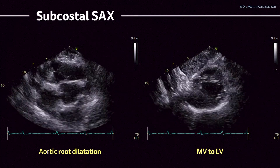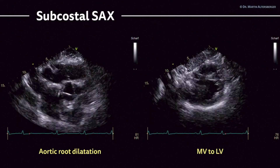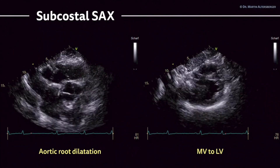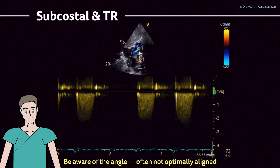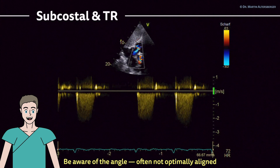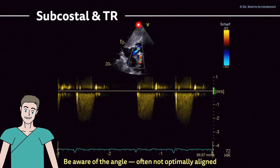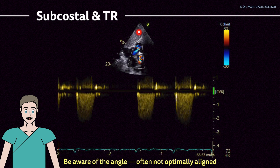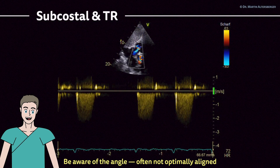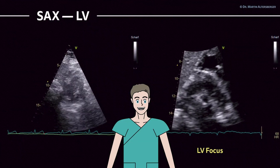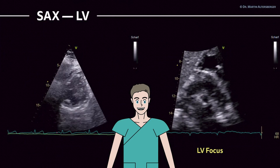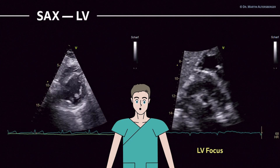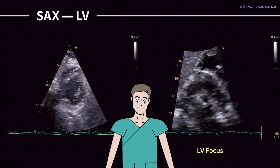Additionally, the tricuspid valve can sometimes be shown in tricuspid detail in this view, and more structures of the right ventricle become visible. Sometimes, if there is optimal alignment with tricuspid regurgitation, you can even measure pulmonary arterial pressures — though often the continuous-wave Doppler is not optimally aligned, making it unreliable. But if you have an optimal signal with a good curve, you can attempt it from the subcostal approach. Focusing on the left ventricle, you can look for wall motion abnormalities and assess the overall radial function of the ventricle.